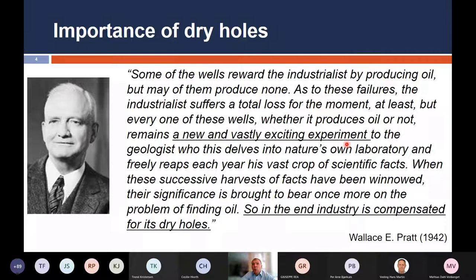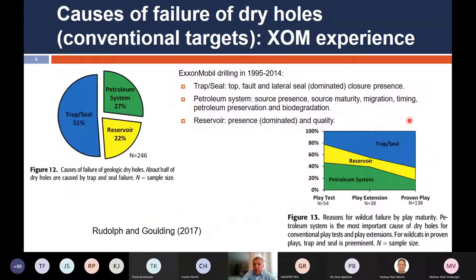A simple example is the recent Guyana story. Before the Liza discovery happened — from which ExxonMobil, CNOOC, and Hess hugely benefited — there were 60 dry holes in the offshore basin. Obviously people learned from those dry holes. What can we actually learn from them? Numerous things, and one of them is the failure mode.